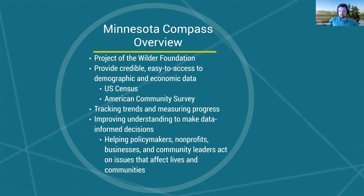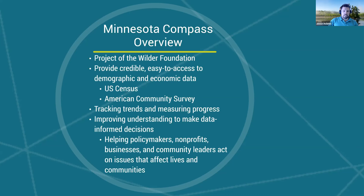Minnesota Compass is a project of the Wilder Foundation. Their mission is to provide easy access to demographic and economic data, typically through the US Census and American Community Survey data, as well as supplemental datasets with workforce information and commute times. They track that data throughout time, and one goal is that each year when the ACS comes out with new data, they can quickly integrate and display it to end users as efficiently as possible.